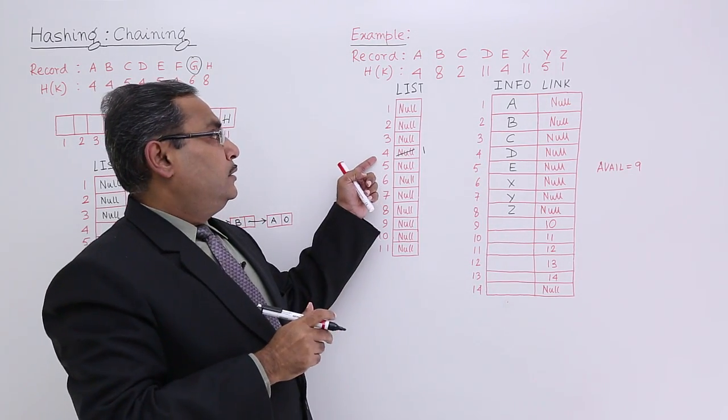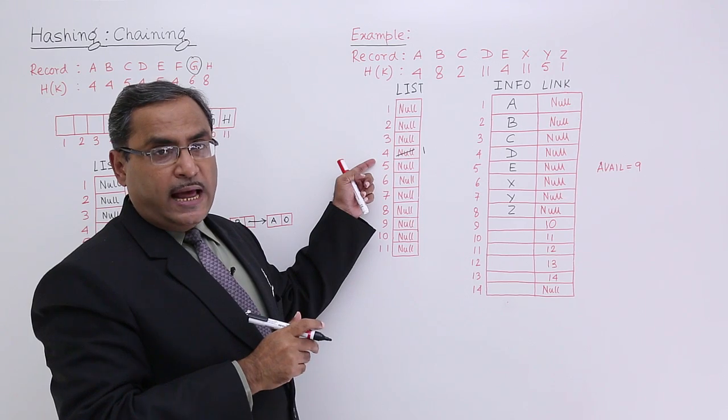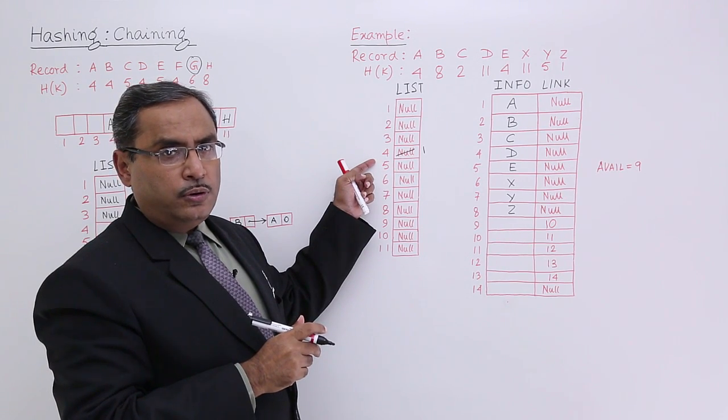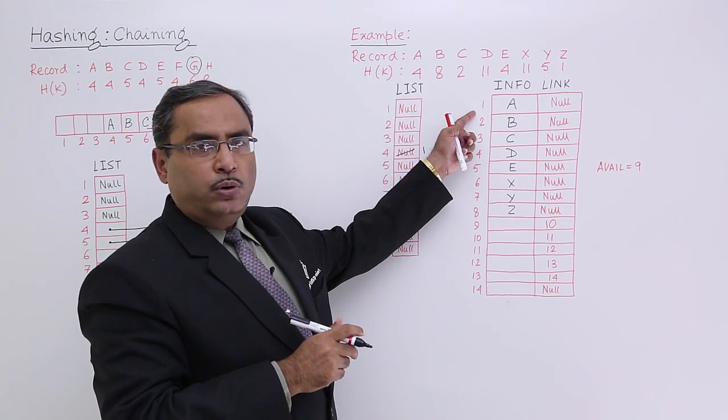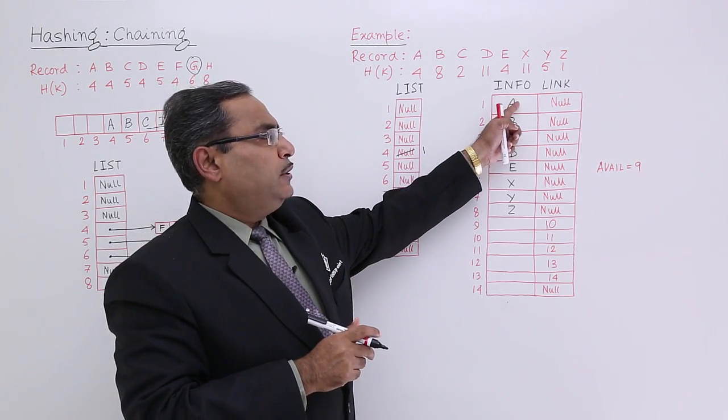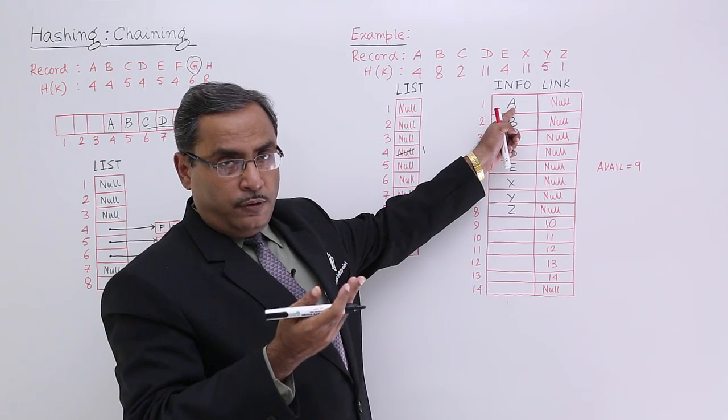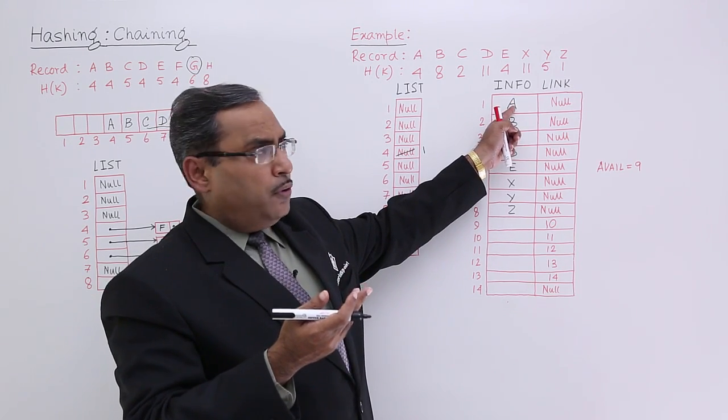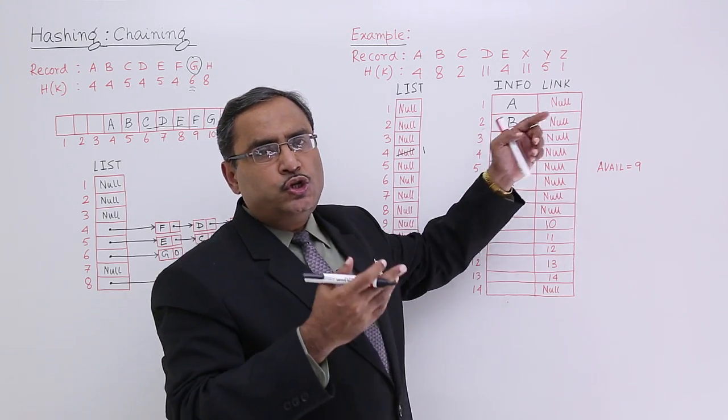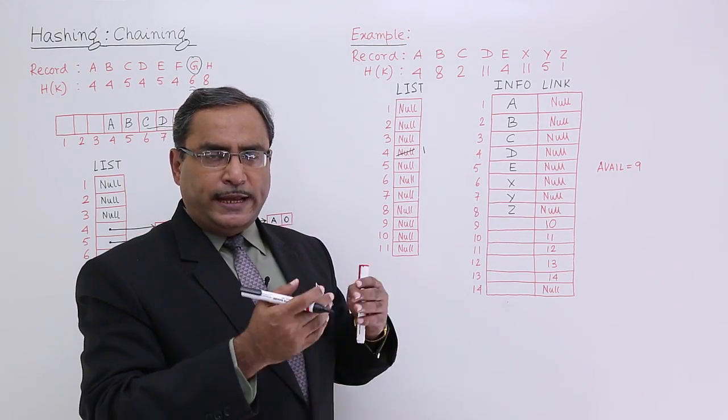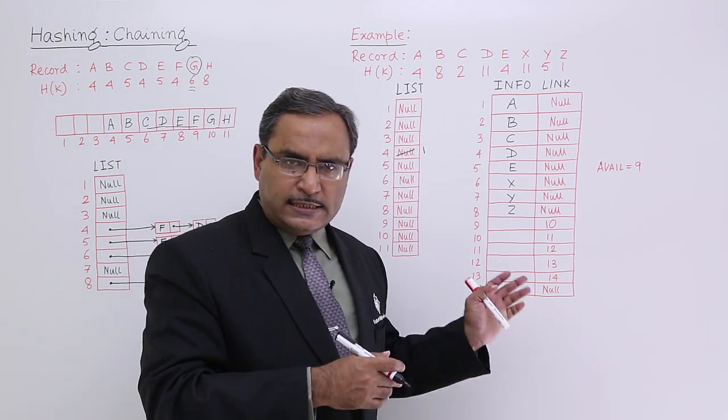That means those nodes which are having h of k equal to 4 are starting from node number 1. Coming to node number 1, I am finding this particular info. But if I search for other info where h of k was 4, then I shall go to that link. I am finding it is null, so no other node is there with h of k equal to 4. That is the concept.